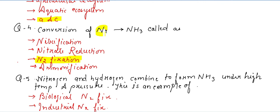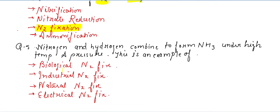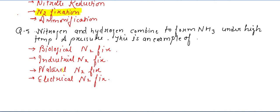Nitrogen cannot be used as such — it cannot be absorbed in the body directly — and that is why it needs to be converted into ammonia, or into nitrates and nitrites. This process is known as nitrogen fixation.